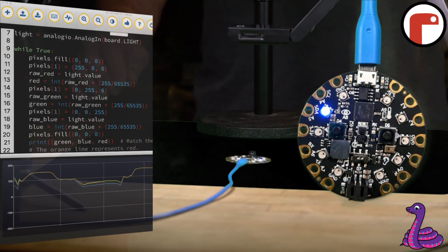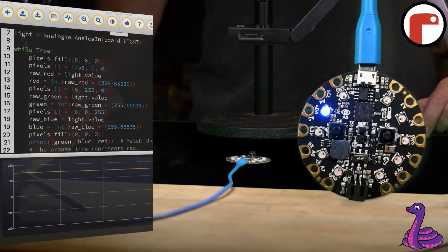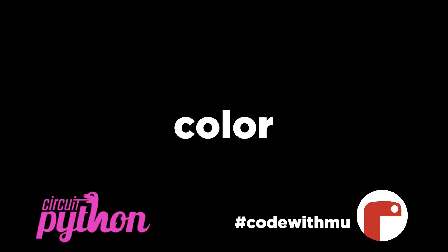Have fun trying this out on all sorts of objects. Shiny ones work best. So, that's all it takes to graph color on the plotter with Moo.